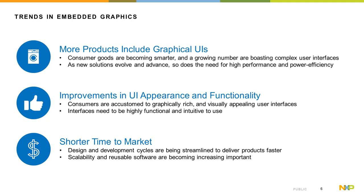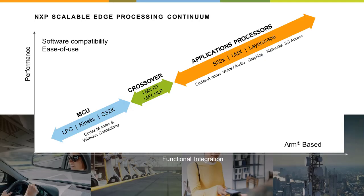Now with all of these trends comes the somewhat obvious conclusion that all of these features inevitably require more power and memory. So how do we balance these new requirements with existing business requirements? How do we streamline the development process to save time and money and ultimately get our product to market quicker? NXP provides a broad range of edge processing solutions in both general purpose MCUs like Kinetis and LPC families and applications processors like the i.MX and Layerscape series, and the i.MX RT crossover series combines the real-time control and power efficiency of MCUs with the performance and multimedia integration of MPUs.